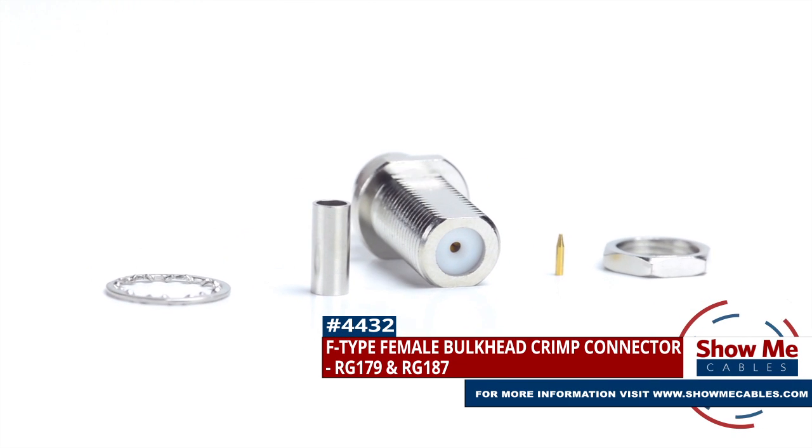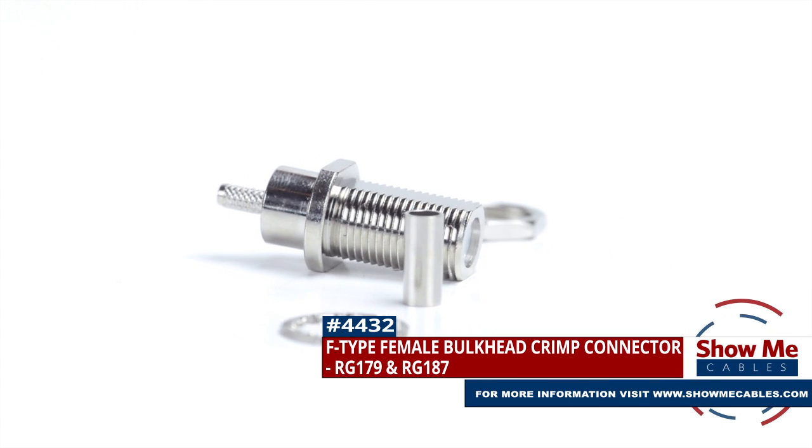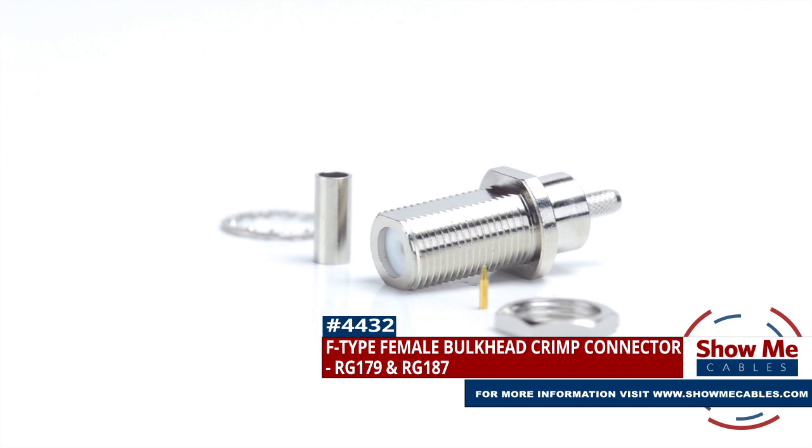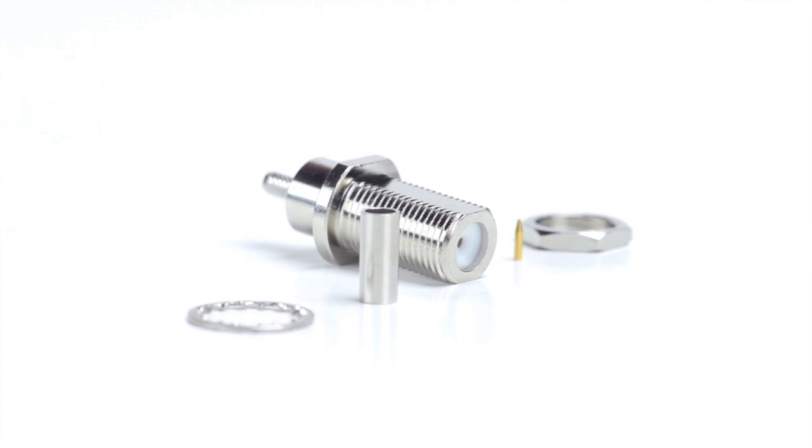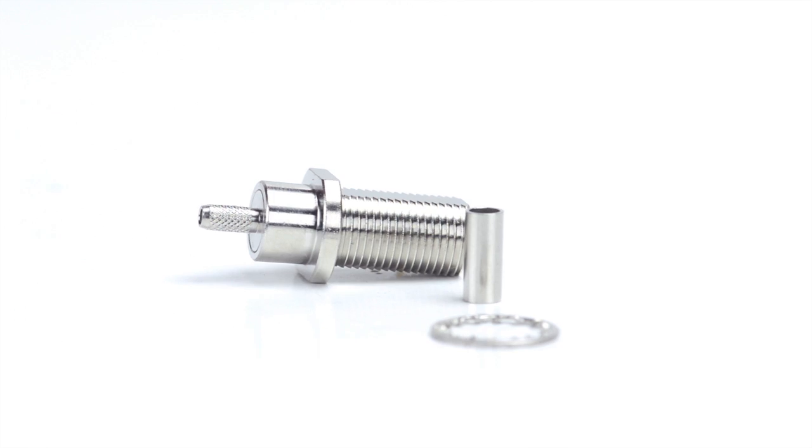Are you looking for a quick and easy DIY installation or repair for your coax cable? Our F-type female bulkhead crimp connector for RG179 and RG187 will provide a simple solution for your wiring needs.